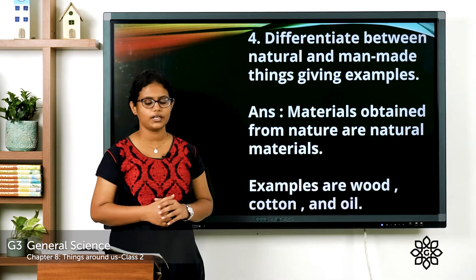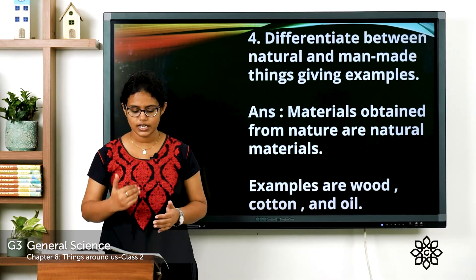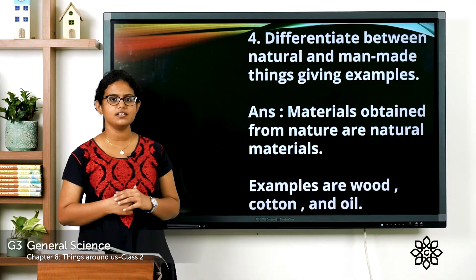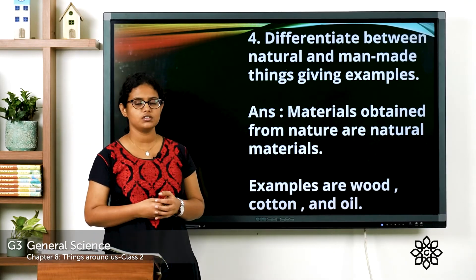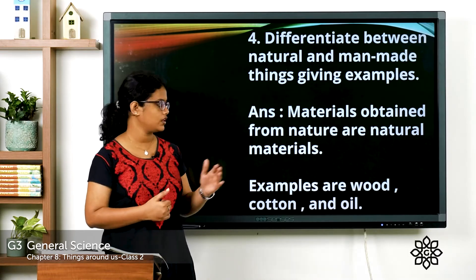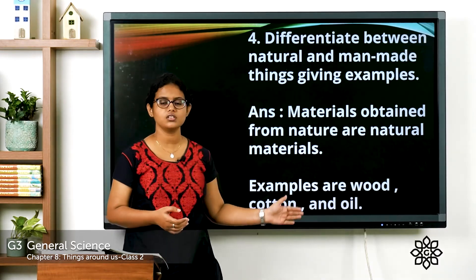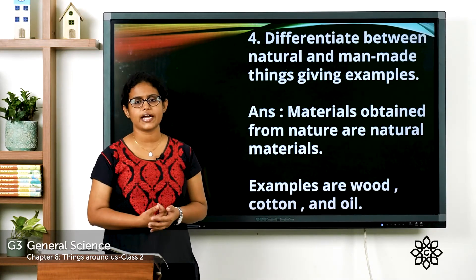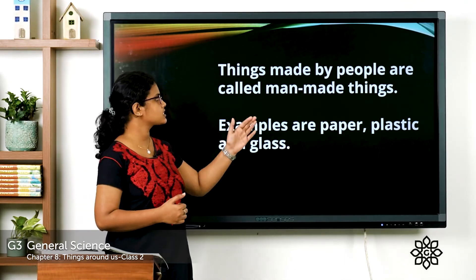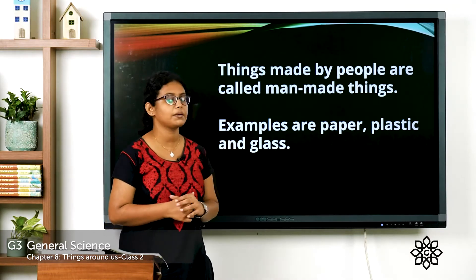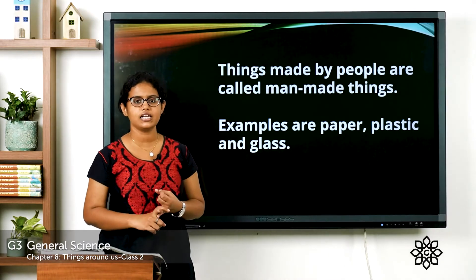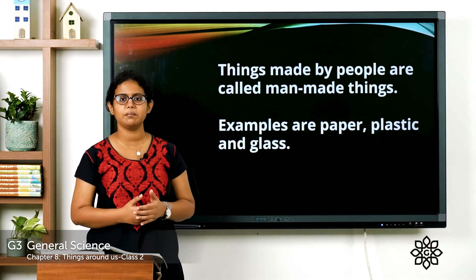Question four — differentiate between natural and man-made things giving examples. Materials obtained from nature are called natural materials; they are found in nature. Examples: wood, cotton, oil. Man-made things are things made by people. Examples: paper, plastic, glass.